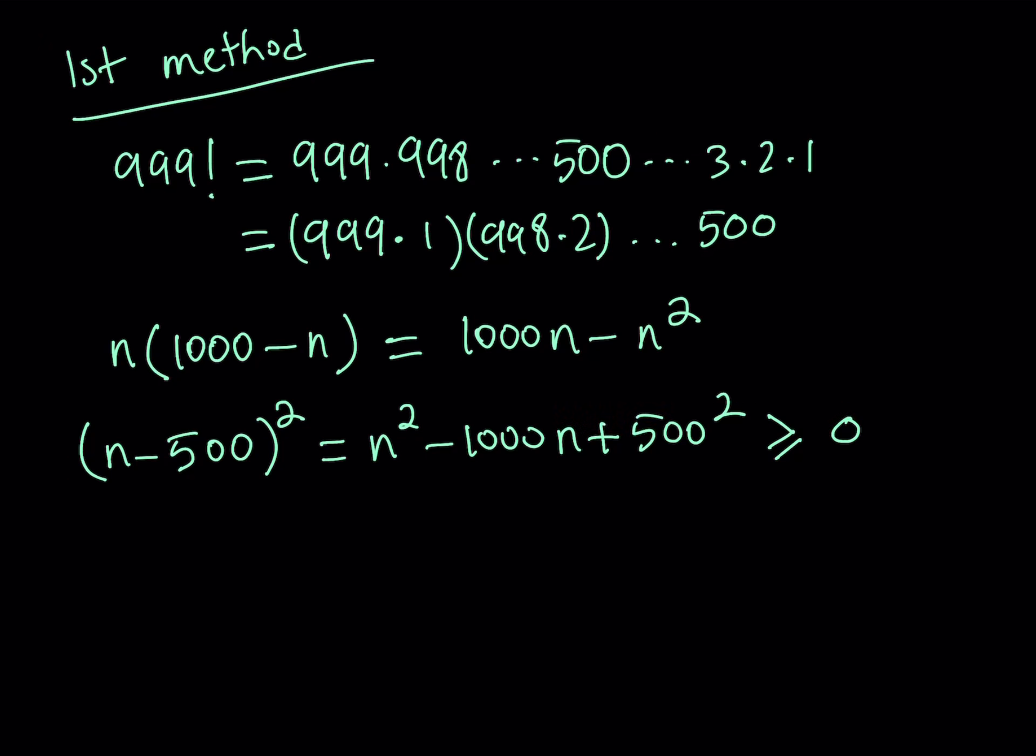Now I want to leave the 500 squared alone on the left-hand side and put everything else on the right-hand side, and that's basically going to give me 1,000n minus n squared. So since n minus 500 squared is a perfect square, we can safely say this is true. But 1,000n minus n squared can be factored as n times 1,000 minus n. So we got an interesting relationship that 500 squared is always going to be greater than or equal to this product.